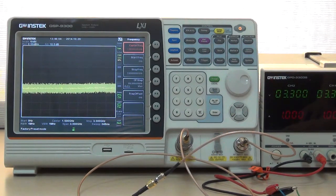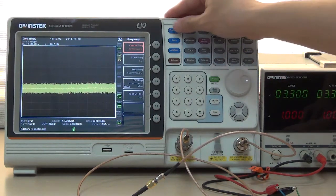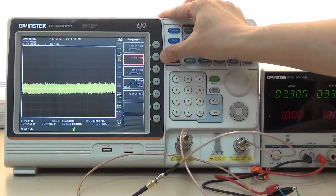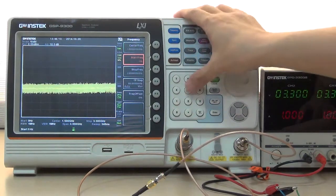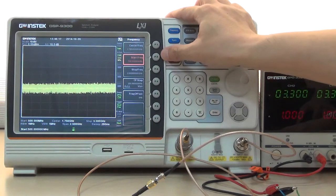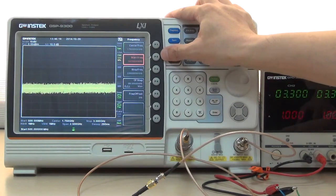To begin the operation, press Frequency and select F2 Start Frequency and input 500 MHz to set Start Frequency as 500 MHz.